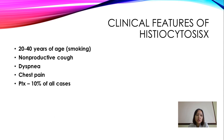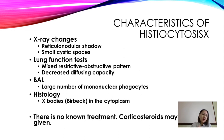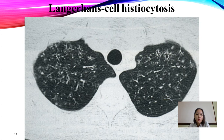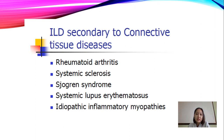Clinical features of histiocytosis X: typically affects patients aged 20–40, often smokers. Symptoms include non-productive cough, dyspnea, and chest pain. Chest X-ray shows vertical nodules and small cystic spaces. Lung function tests show a mixed restrictive-obstructive pattern and decreased diffusion capacity. Bronchoalveolar lavage shows a large number of mononuclear phagocytes. Histology is the main diagnostic tool. There is no known treatment; corticosteroids may be given.